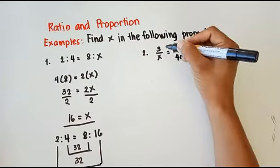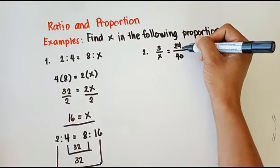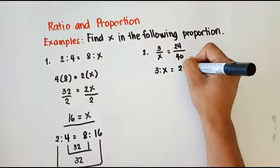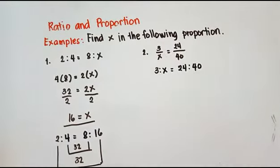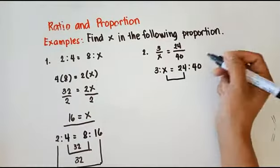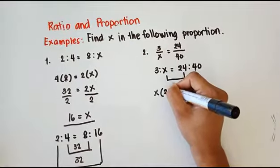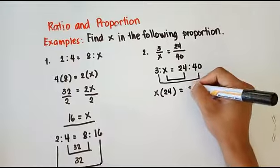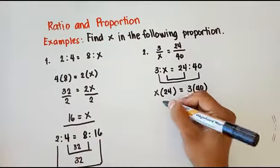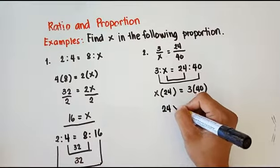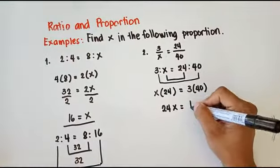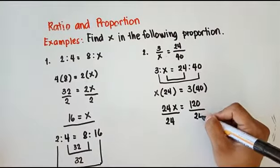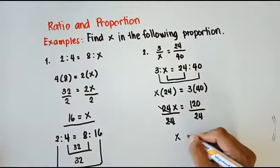Number two: we have 3 over x equals 24 over 40. We write this as 3 is to x is equal to 24 is to 40. Getting the product of the means: x times 24 equals 3 times 40. So 24x equals 120. Divide both sides by 24 — x is equal to 5.